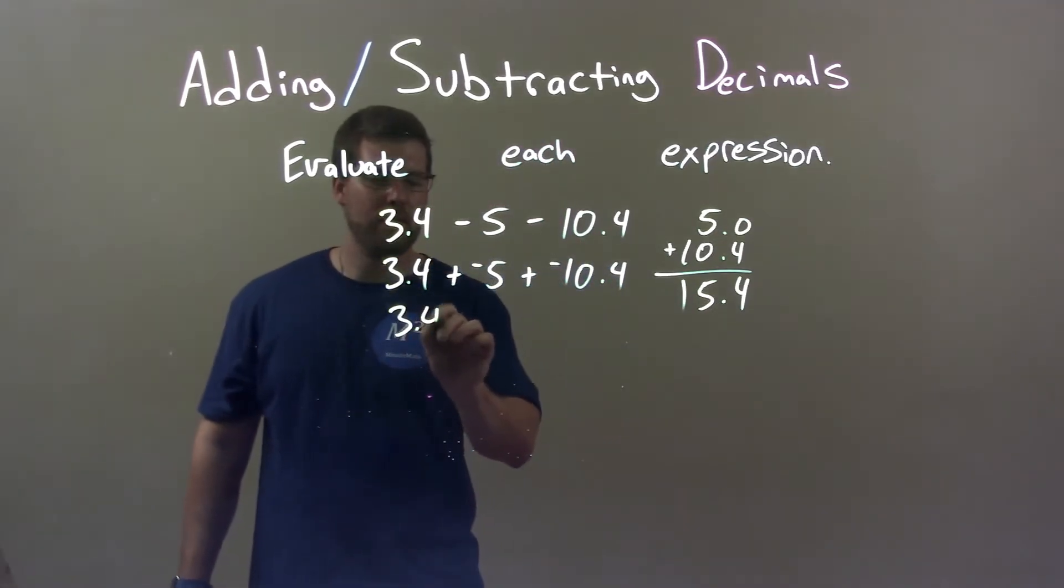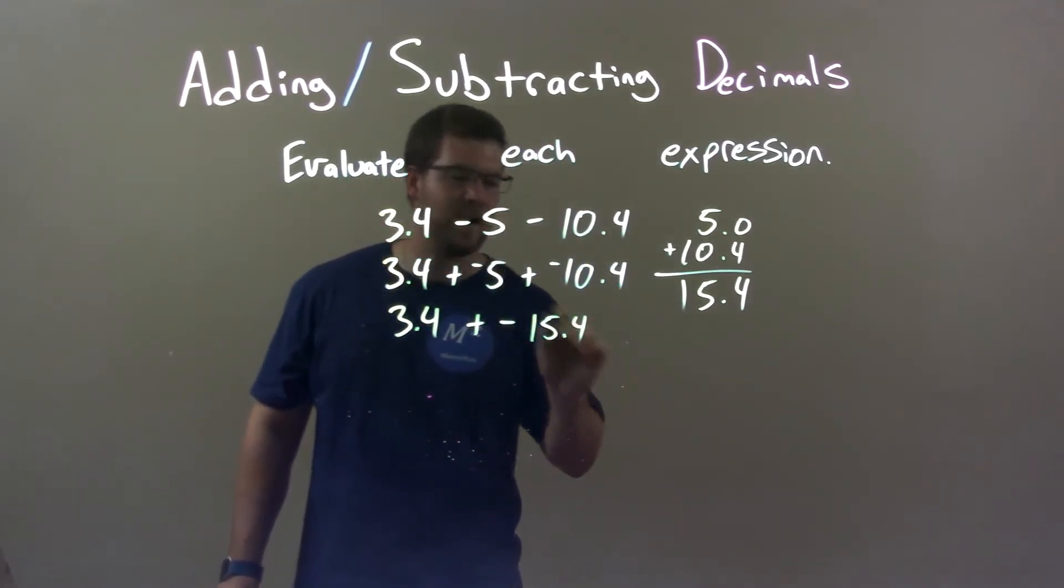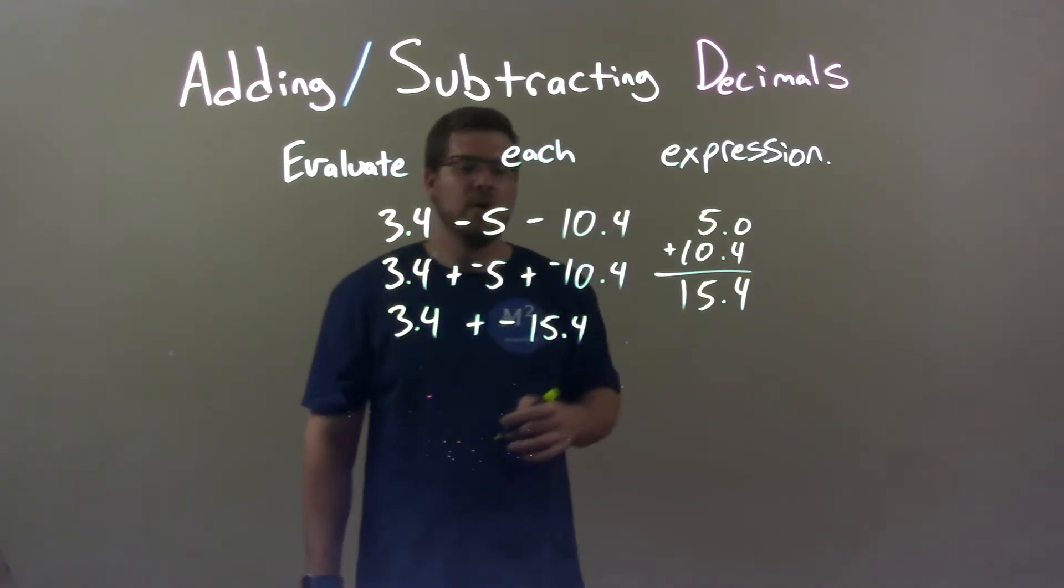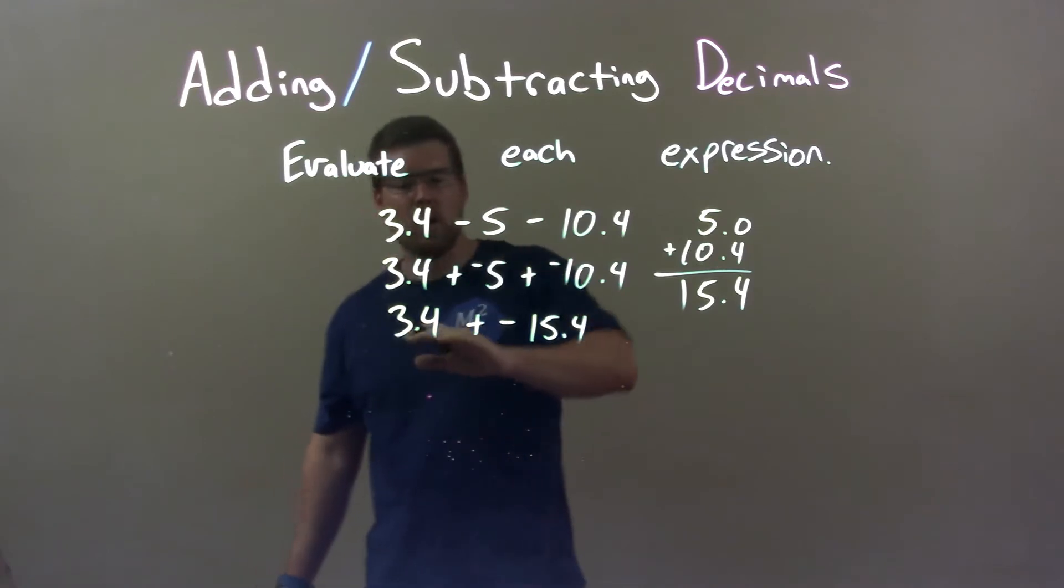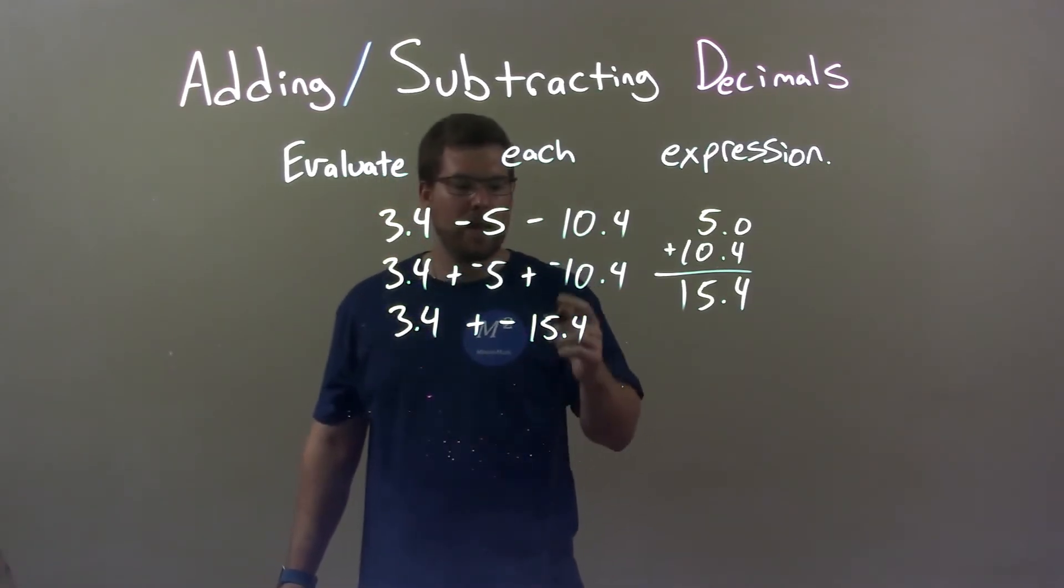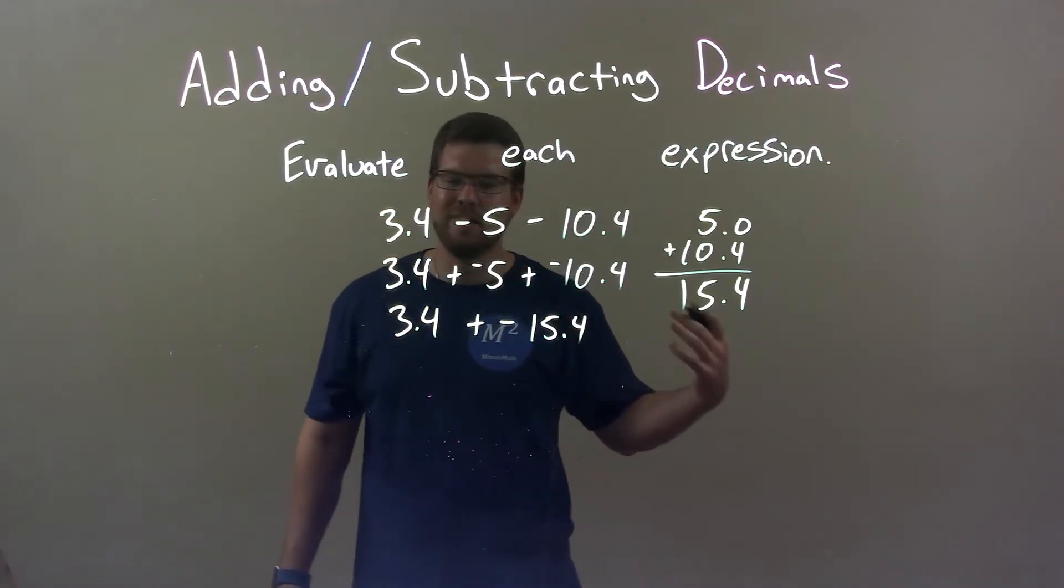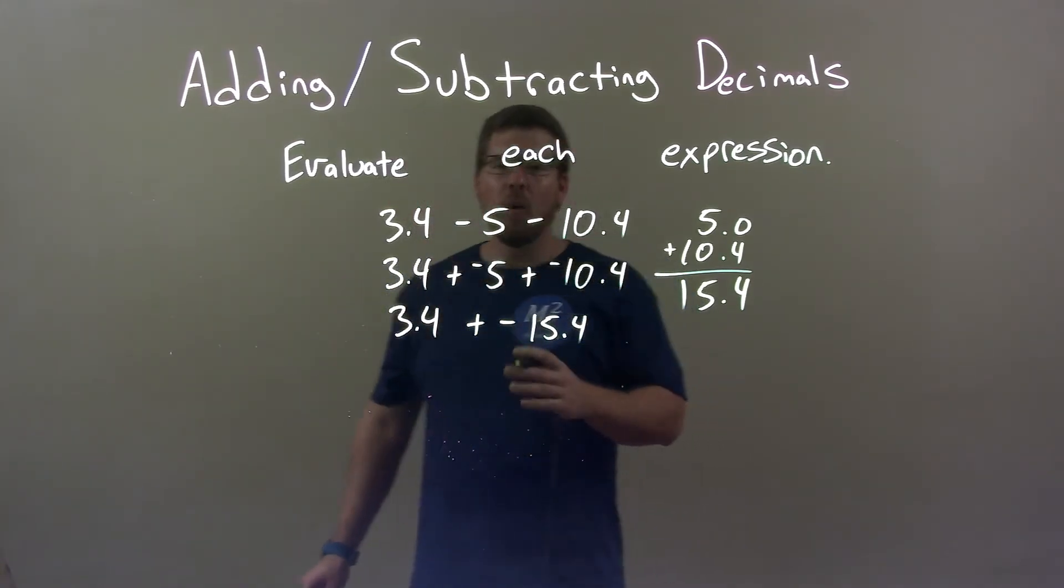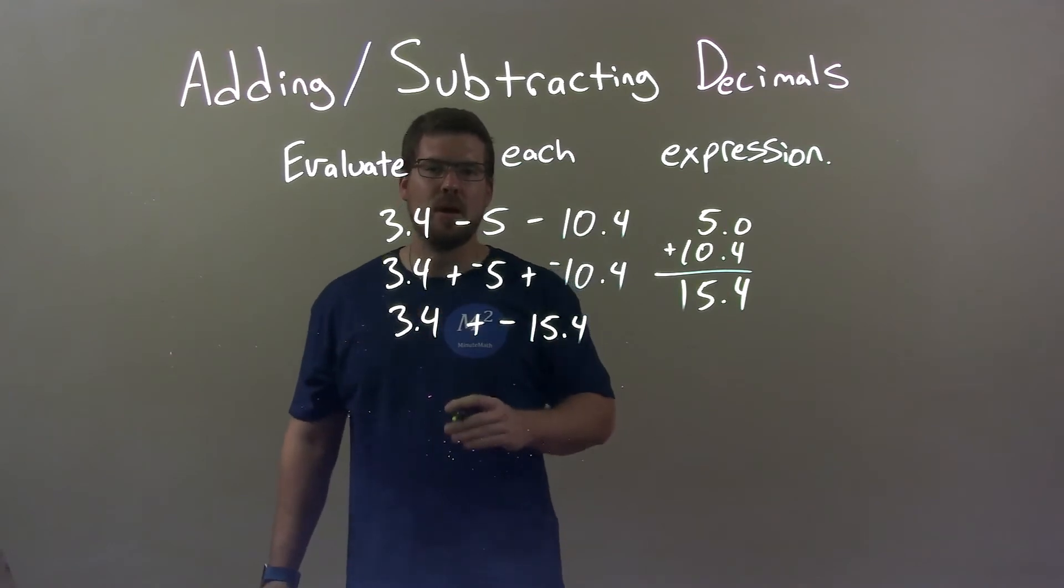So we have 3.4 plus a negative 15.4 here. And you probably, to be honest, could have done it there. Now we're working on getting the rest done. Well, negative 15.4 is larger, more negative. And 3.4 is positive. So all we have to do is find the difference between these two numbers and then slap on the negative because this one's larger.